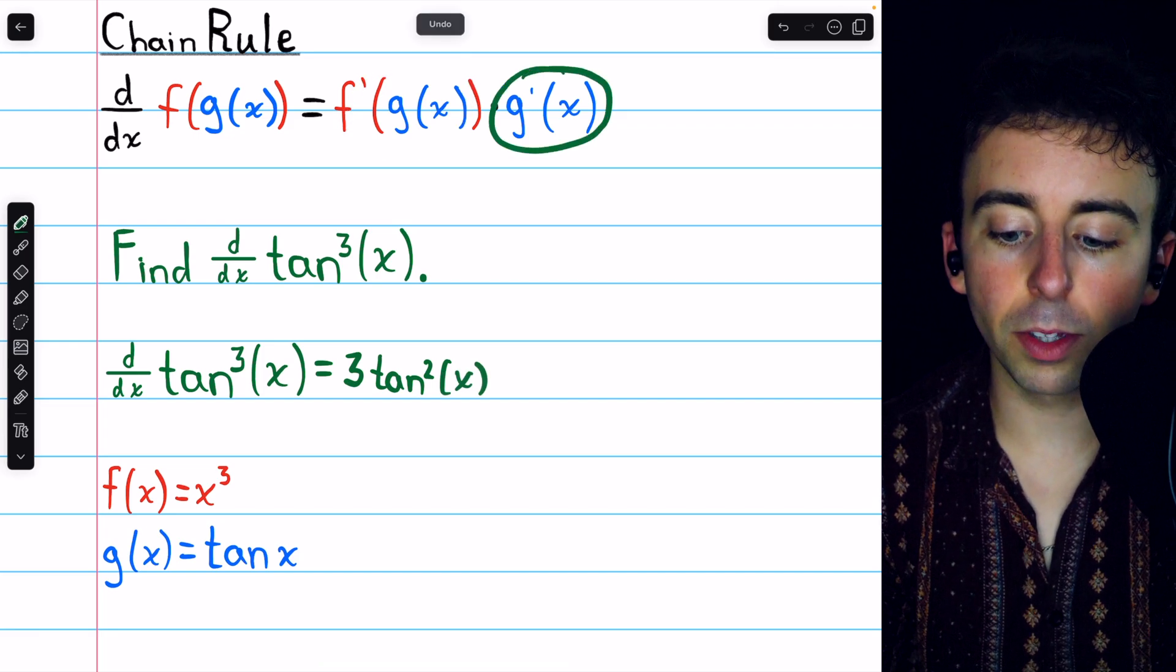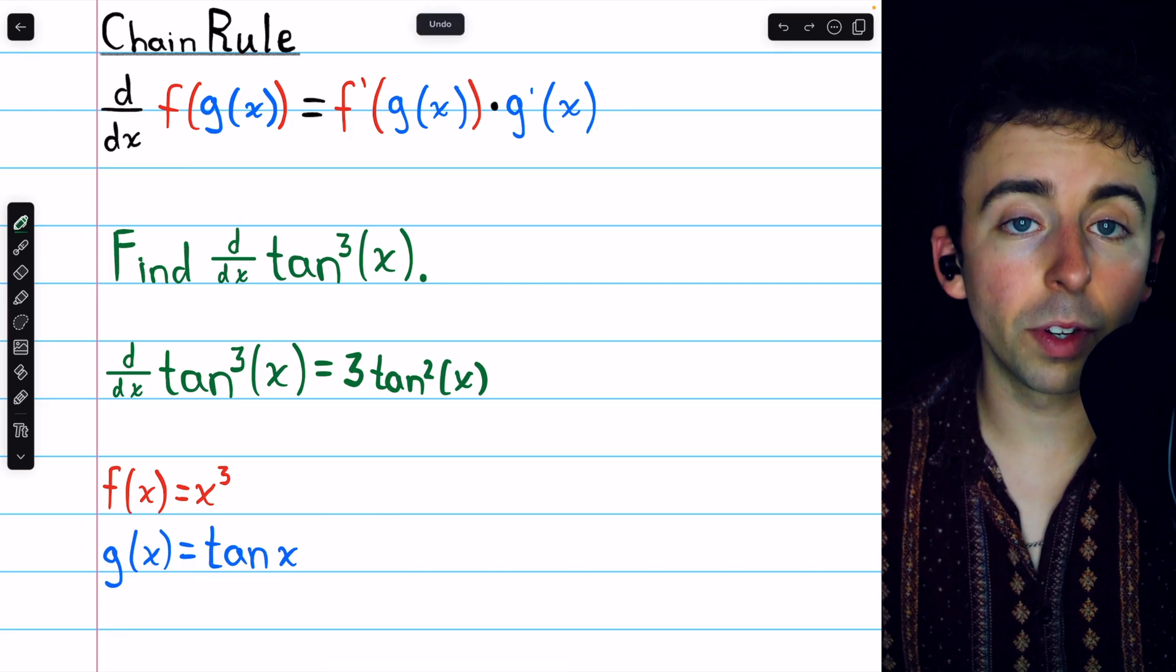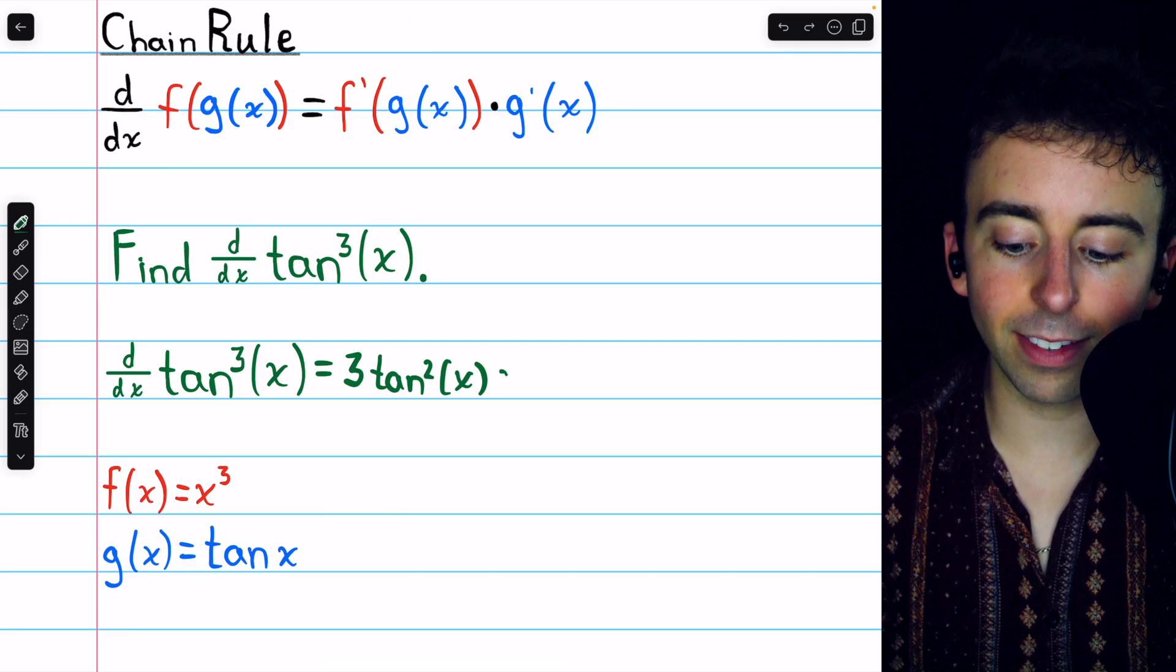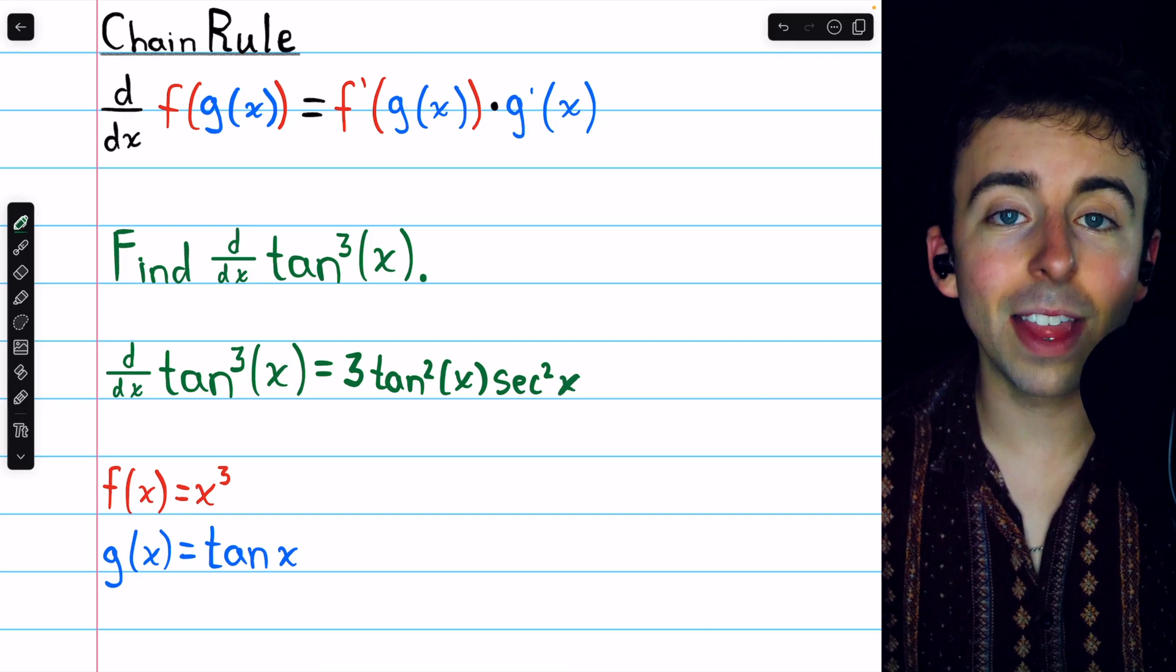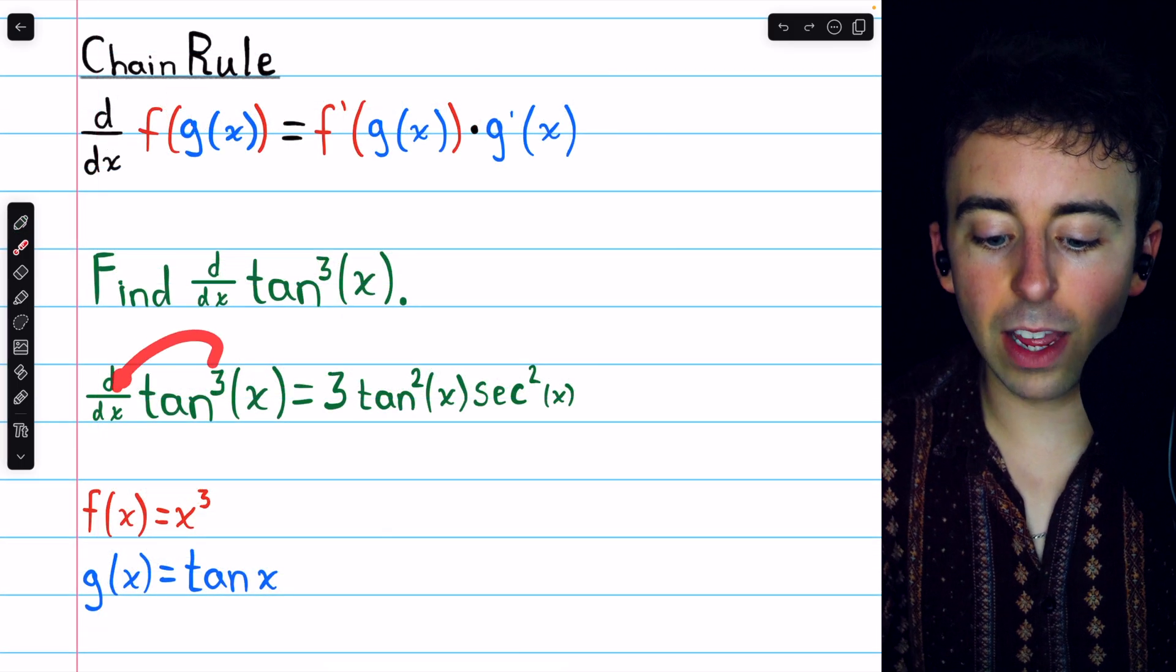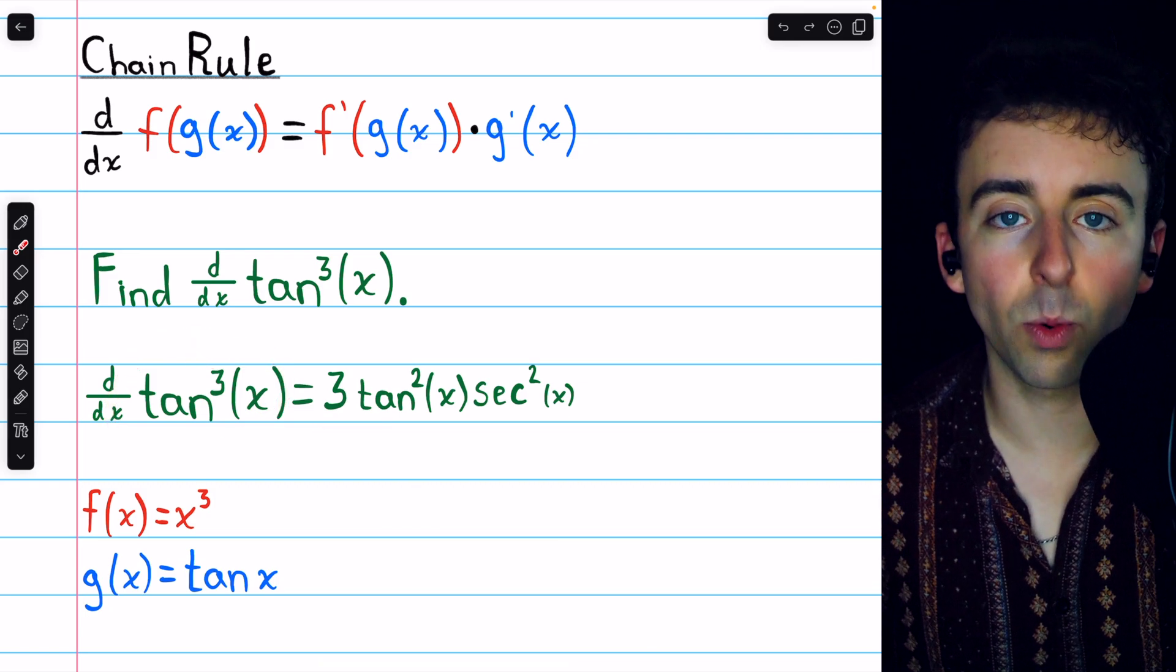and then we just have to multiply by g prime, the derivative of the inside function, which is tangent. The derivative of tangent, hopefully you remember, is secant squared, and so we just multiply by secant squared, and that's our derivative. The derivative of tangent cubed of x is 3 tangent squared of x times secant squared of x.